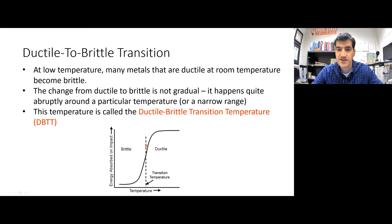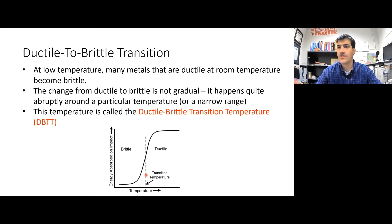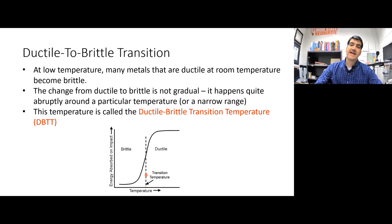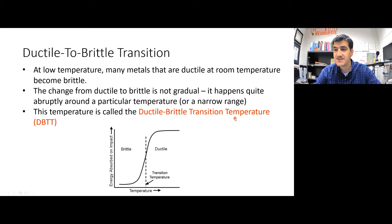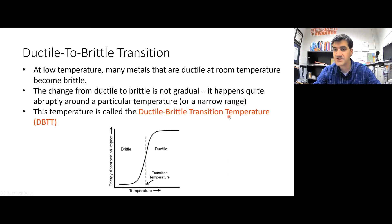We call this temperature the ductile to brittle transition temperature, or DBTT. When I was an undergrad, we called it the reference transition temperature, RTT — they mean the same thing. DBTT is more descriptive and more common in the literature. Importantly, the DBTT doesn't happen for all materials. It does happen for all metals with a body centered cubic (BCC) lattice structure and some hexagonal close packed (HCP) metals.